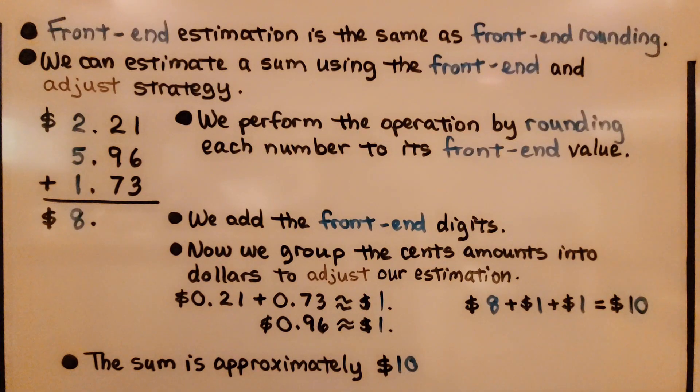Front end estimation is the same as front end rounding. We can estimate a sum using the front end and adjust strategy. Here we have $2.21 plus $5.96 plus $1.73. We perform the operation by rounding each number to its front end value.